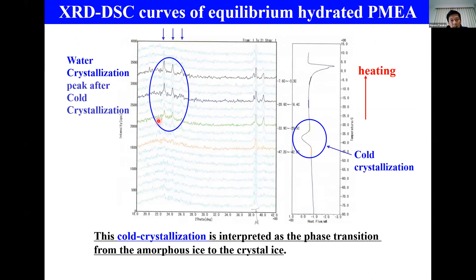This is the evidence of crystallization of water and melting of ice from XRD and DSC measurements at the same time. XRD and DSC curves of equilibrium hydrated PMEA. After observing cold crystallization of hydrated water, we could see the water crystallization peak after cold crystallization and melting of ice at just zero degrees C. This means the cold crystallization peak showed the phase transition from amorphous ice to crystal ice.